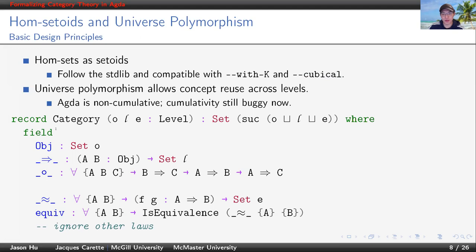Here is a partial definition of a category in our library. This definition is indexed by three universe levels. O is the level for objects, L is the level for morphisms, E is the level for this binary relation between morphisms. Equiv is a field carrying a proof of this binary relation actually being an equivalence relation. And these two combine to make our definition setoid-based.